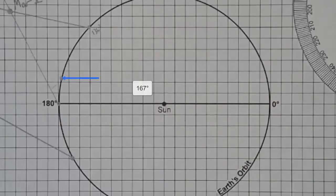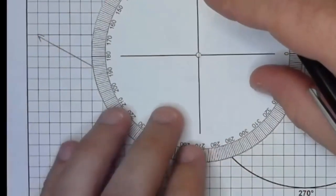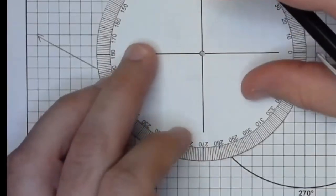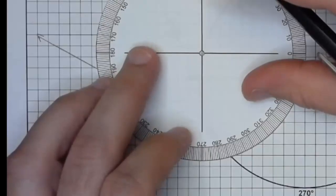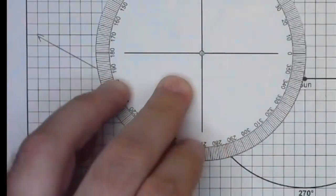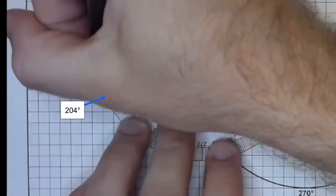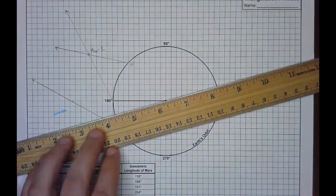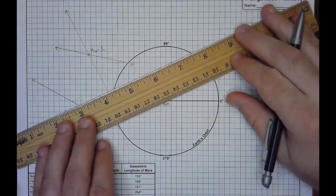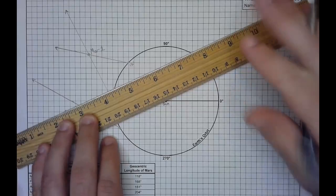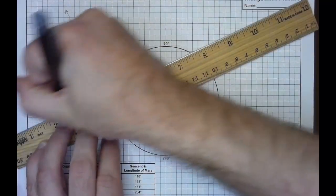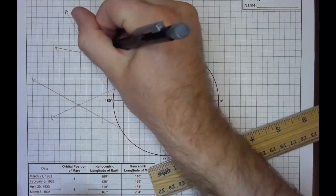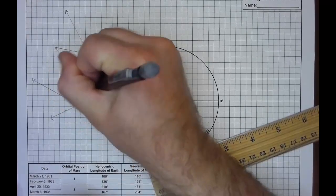So from 167 degrees heliocentric longitude of Earth, we're going 204 degrees geocentric longitude of Mars. That looks pretty good. 204 degrees. It's going to be down here. Connect this up with a straight edge. And again, our intersection point is what we really care about. That should say Mars position two.